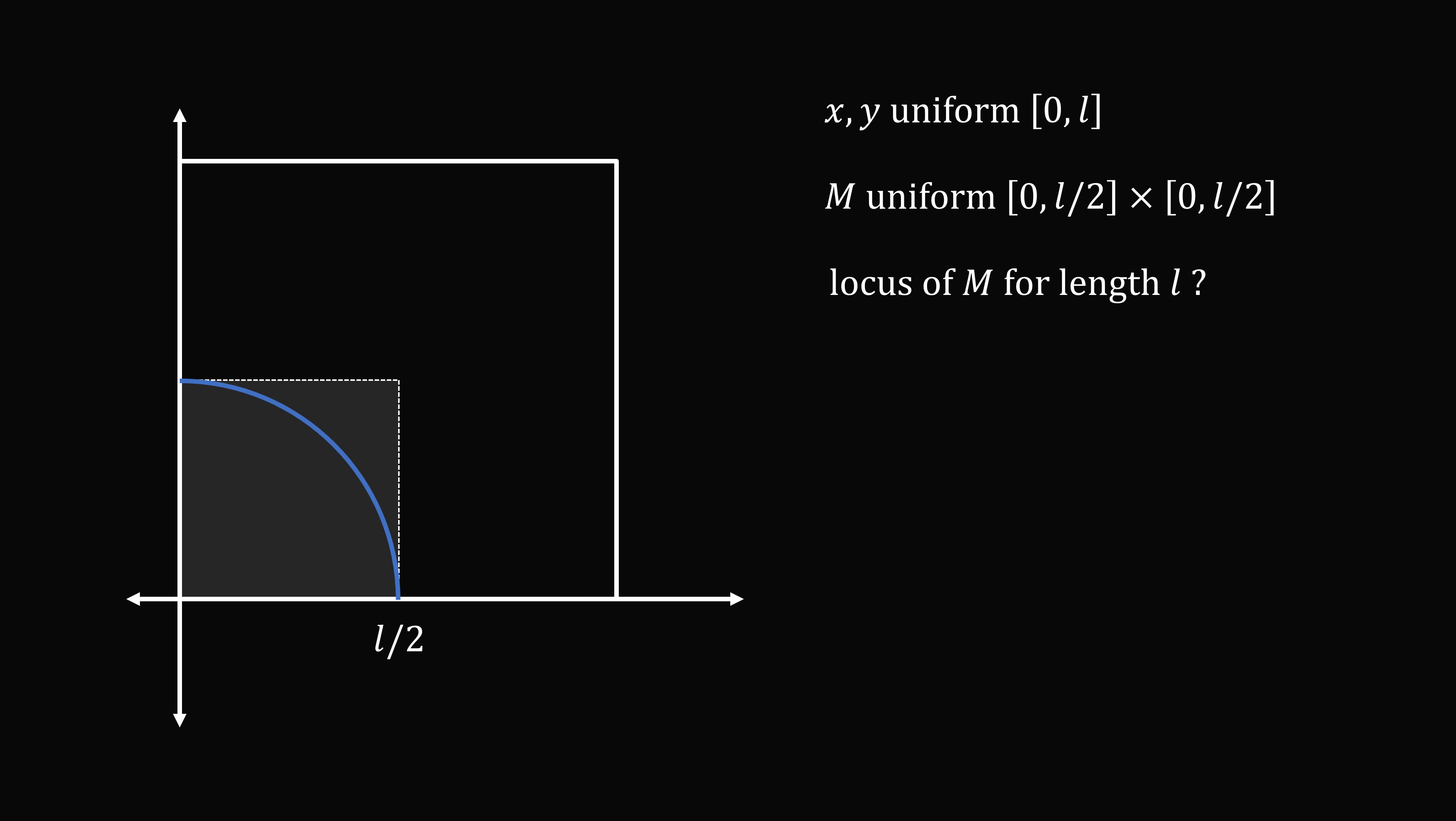Now where do we go from here? Take a look at the region that's contained in this quarter circle. If M is anywhere in here, the distance between the two points will be less than L. So the probability that D is less than or equal to L is equal to the area of the quarter circle divided by the area of the shaded square. So the area of the quarter circle is 1/4 multiplied by π multiplied by the radius squared. The radius is equal to L/2. And the area of this square is equal to the square of L/2. So this simplifies to be π/4.